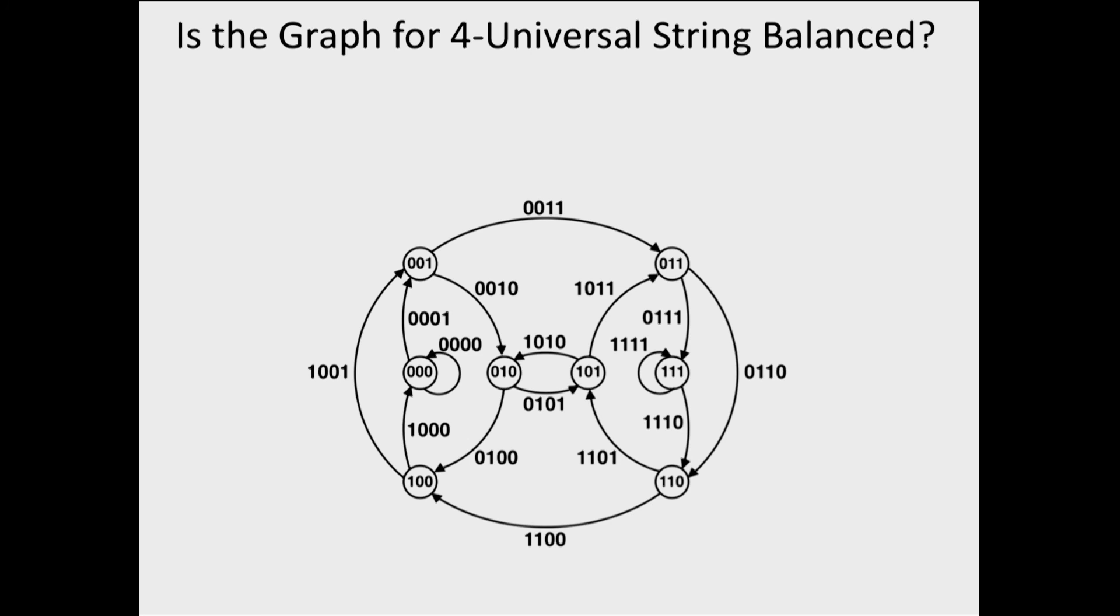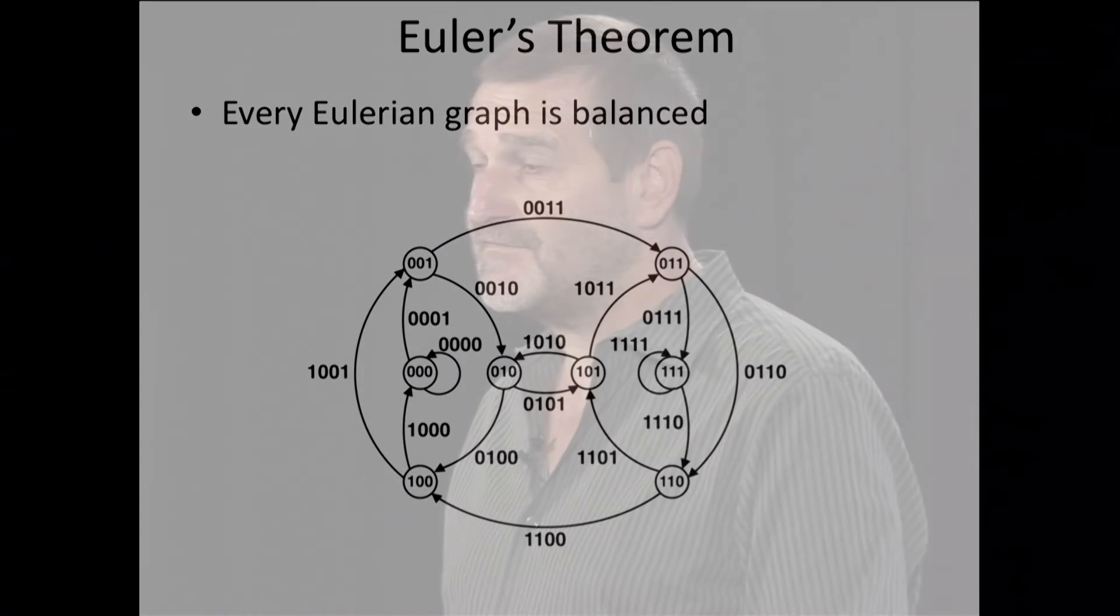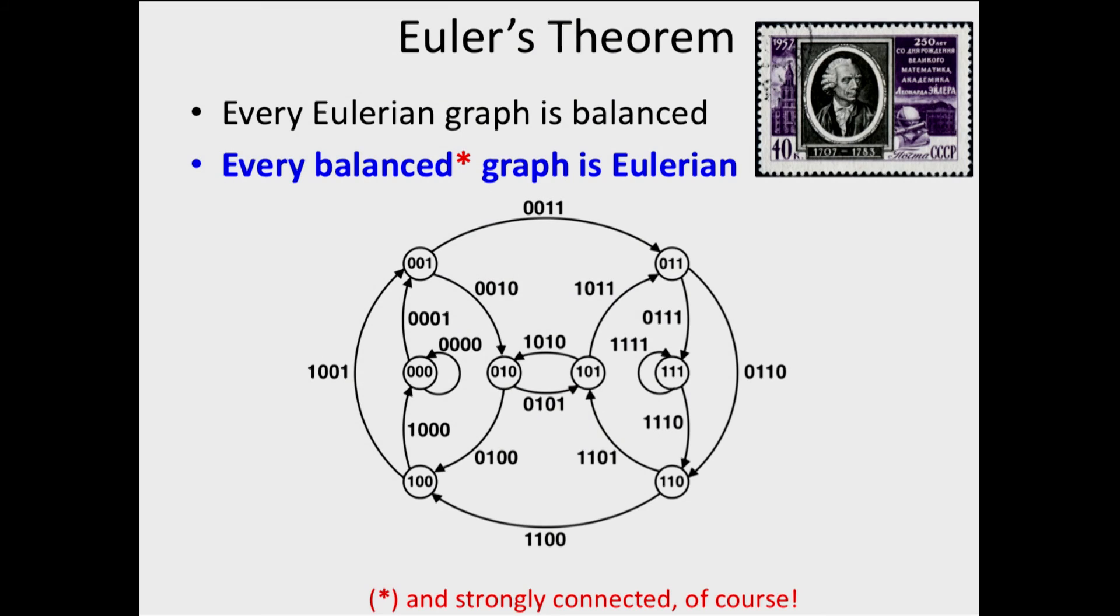Is this graph balanced? Of course, we can check that for every node there are two incoming and two outgoing edges. But it doesn't help us yet to figure out whether there is an Eulerian cycle in this graph. And now we are ready to present Euler's theorem. We already saw that every Eulerian graph is balanced, so this graph has a chance to be Eulerian. Euler proved that every balanced graph is Eulerian—of course, balanced and strongly connected, because if the graph is disconnected there is no way to find an Eulerian cycle.